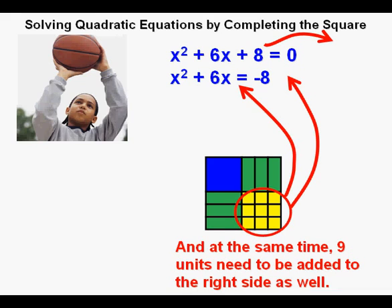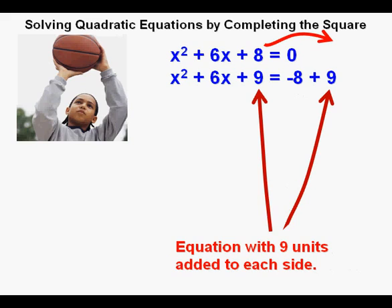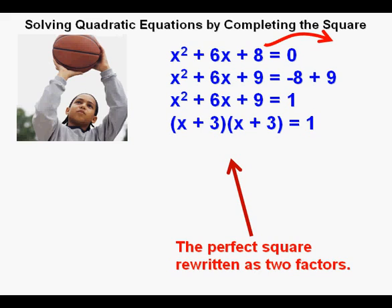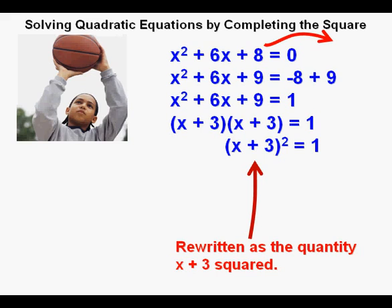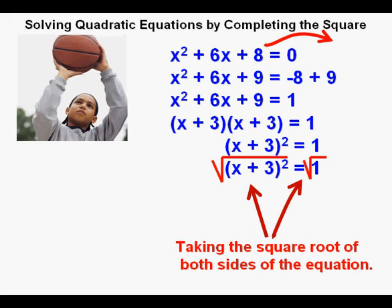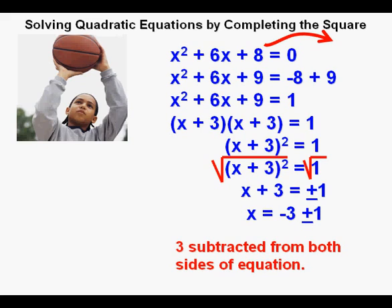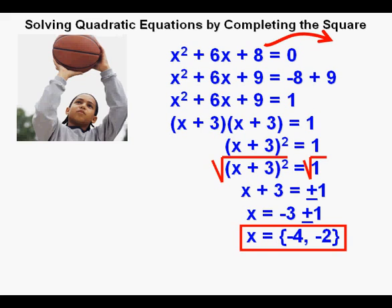According to the golden rule of algebra, what we do to one side of the equation, we have to do to the other side as well, so we add 9 to the right side too. Now we have x squared plus 6x plus 9 on the left and negative 8 plus 9 on the right, which simplifies to 1. The perfect square trinomial on the left factors as quantity x plus 3 times quantity x plus 3, or quantity x plus 3 squared equals 1. Taking the square root of both sides gives x plus 3 equals plus or minus 1, so x equals negative 3 plus or minus 1.